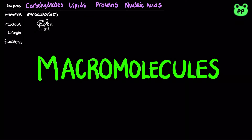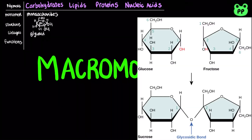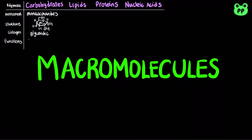Glucose is the most common monosaccharide. Monosaccharides are linked by glycosidic linkages to form disaccharides with two monomers and polysaccharides with three or more monomers. Functions of carbohydrates include energy storage, structural support, and cell recognition.